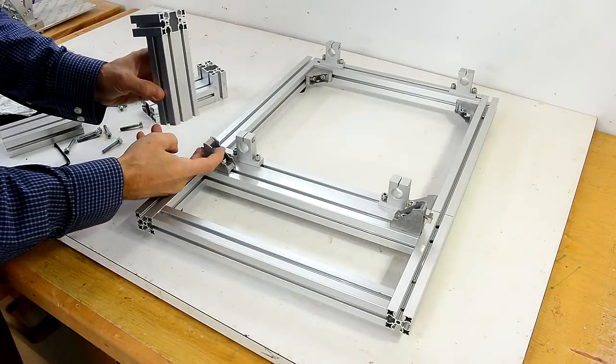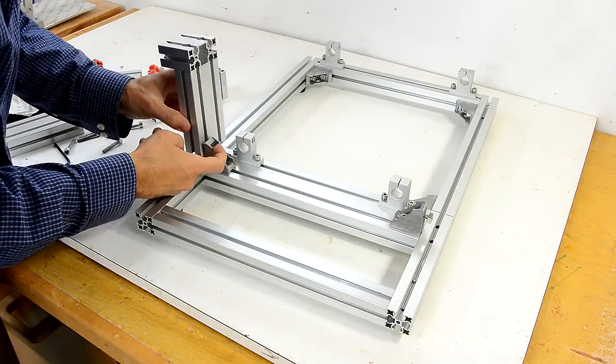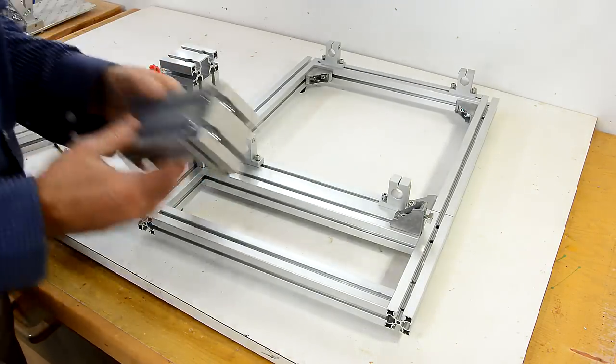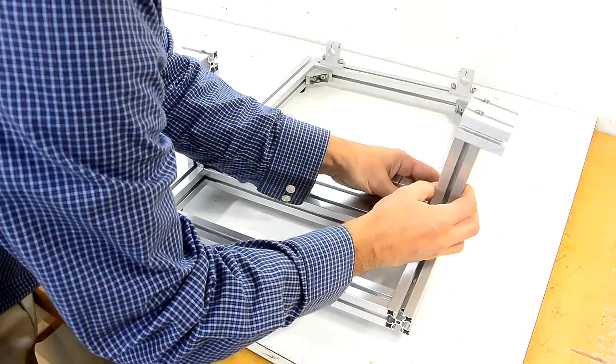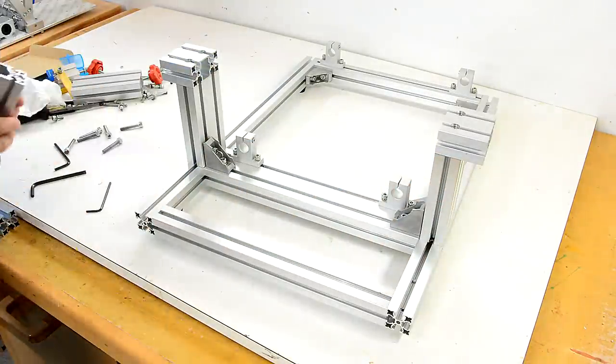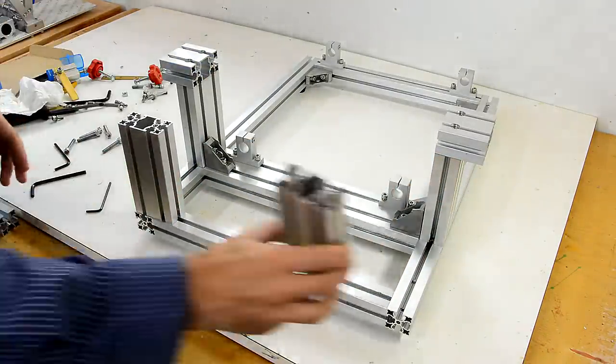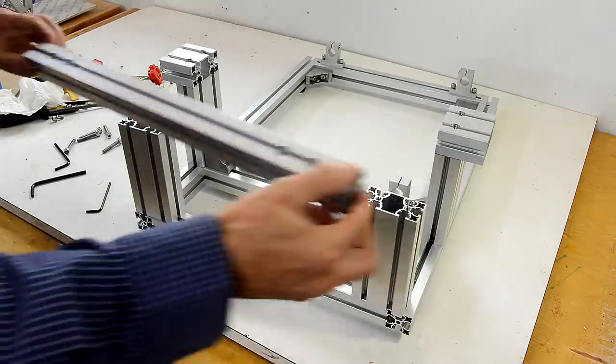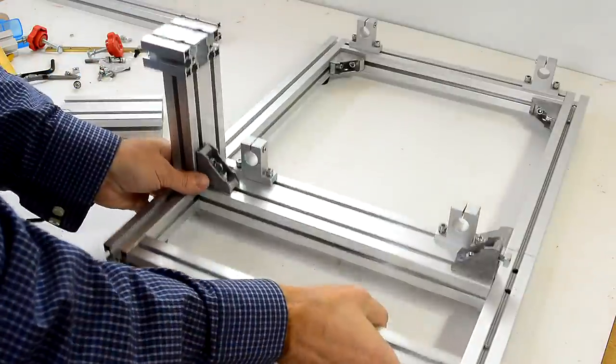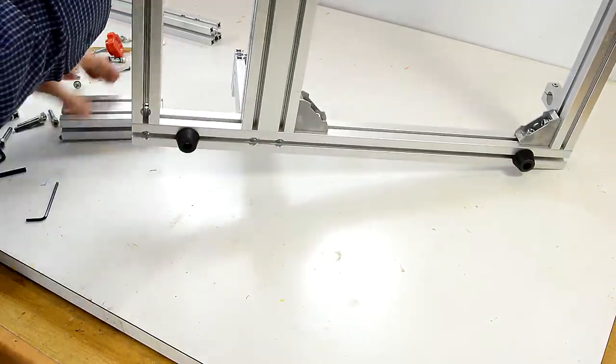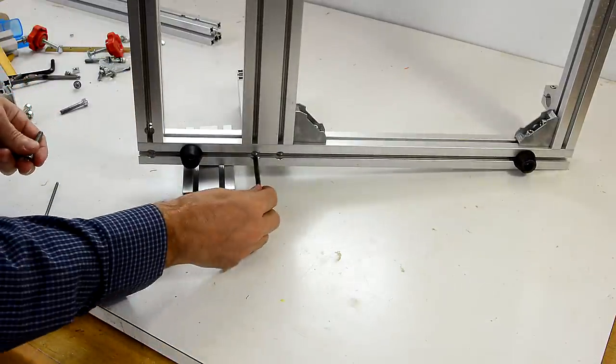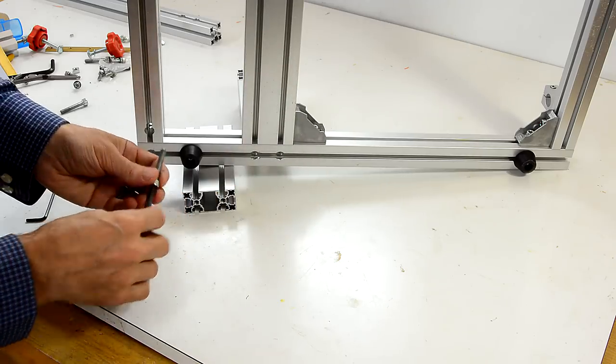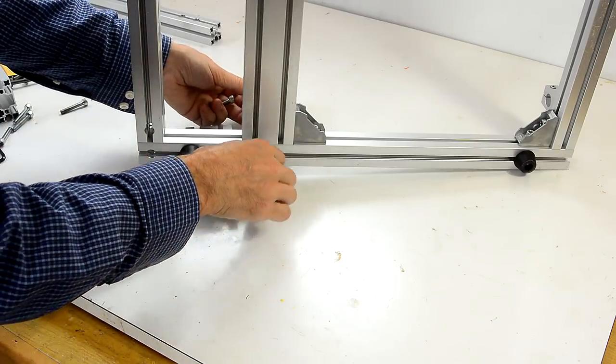Next comes the supports for the table and these consist of these L-shaped ones facing outwards, here and here. And these two pieces here and this bar across. These all attach with screws from the bottom. And this is why it's important to have these drilled holes facing down so we can get the screws in there.